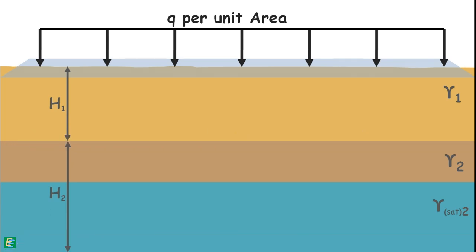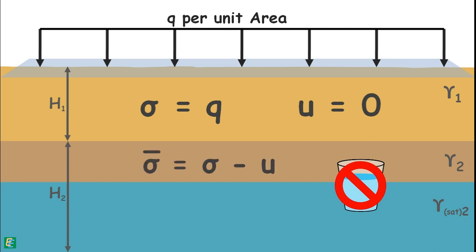Let us begin with the soil surface. Total stress on the surface of the soil is because of surcharge only, so total stress equals the surcharge q. No water is present above this plane, so pore water pressure is zero. Hence effective stress, which is total stress minus pore water pressure, is q, the surcharge load.